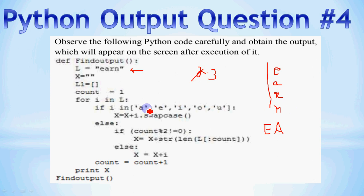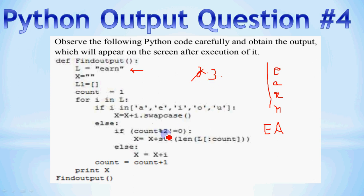Now the value is R. R is not part of the vowels list [R, A, E, I, O, U] — R is not a vowel, so the condition is false. We go to the else branch. In the else, we check: if count mod 2 is not equal to 0. Count value is 3. So 3 mod 2 — 3 divided by 2 gives remainder 1. 1 is not equal to 0, so this condition is true.